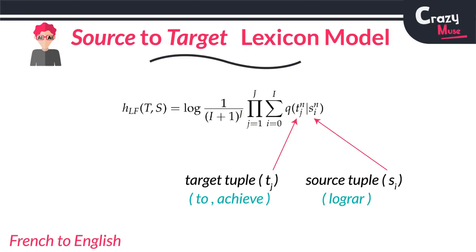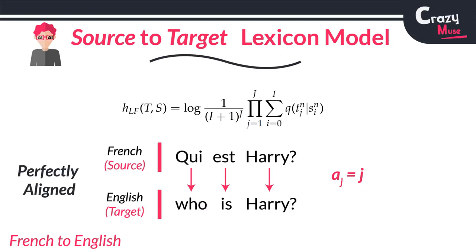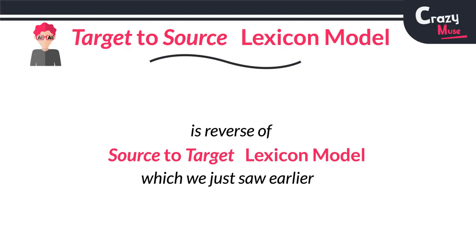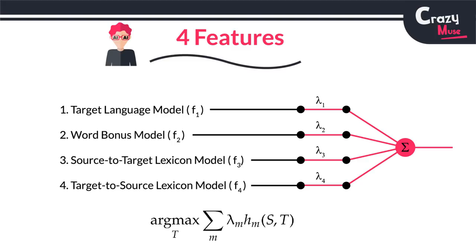Third, the source-to-target lexicon model. It is learning alignment a_j for the target. So if the languages are perfectly aligned then a_j equals j; otherwise a_j can be any value like j-1 or so on. Fourth, the target-to-source lexicon model. In this case, we will be learning a complementary translation model, so the alignments to be learned are for the source. These four features are combined and we also learn the weights of this feature combination which yields the best result — think of it as more or less like a grid search.